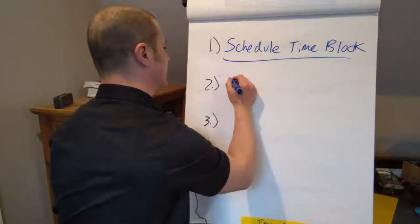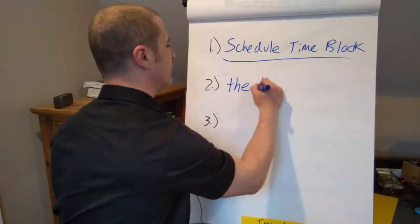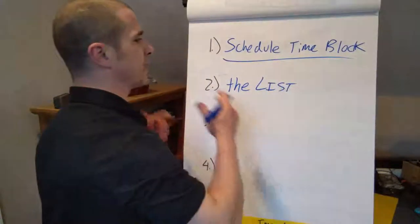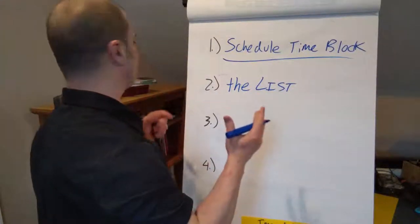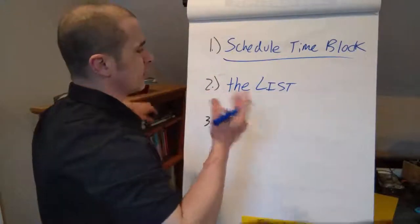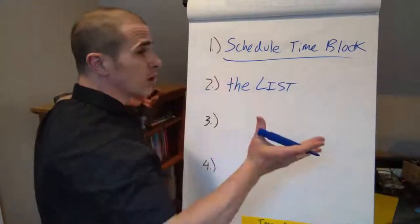Number two, the list. So whatever activity you're going to do, if it's cold leads, you have people bring 10 cold leads. If it is people that are owed a follow-up call, you bring those. If it's cold calling, a cold calling block, doing some prospecting, that's okay.